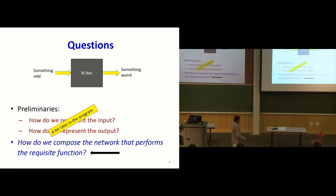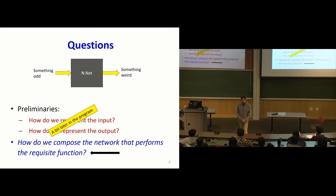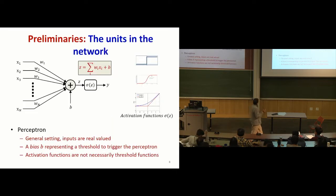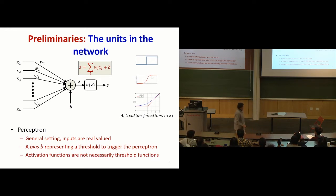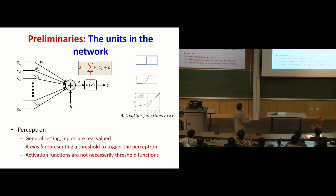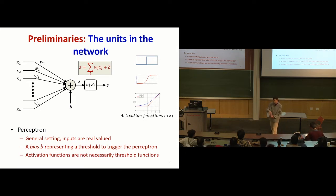We're not going to look at input/output representation today — that's later in the program. We're going to assume we know exactly how to represent the input and what we want from the output, and focus on the network itself. The units in the network compute a weighted combination of inputs plus a bias term — an affine combination — and then apply an activation function. The earliest perceptron models used a threshold activation.